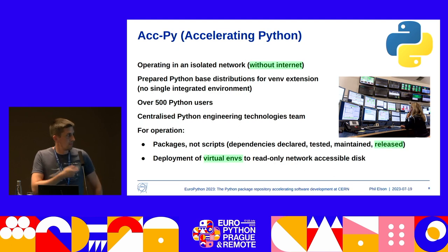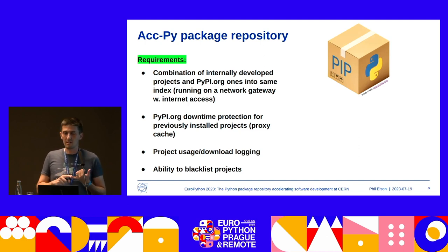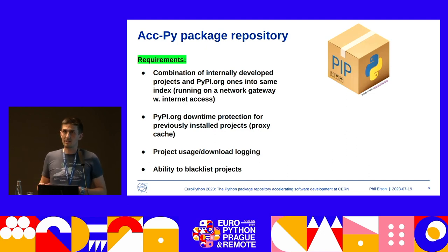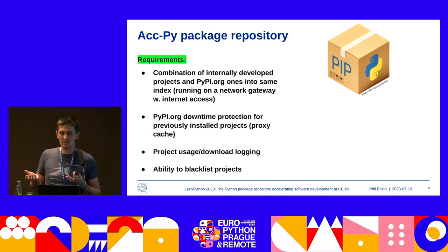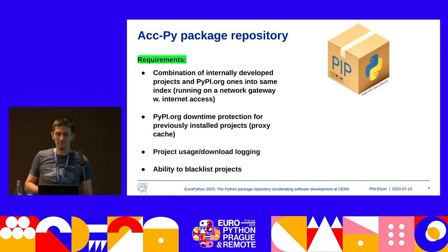Without internet and released using virtual environments, you of course need a package repository. I'm going to call it AccPy. Our package repository needs are quite simple: we have a bunch of our own internally developed packages and we want to use those on pypi.org with the same index. We'll need some kind of gateway to get the internet into our repository from a secure network. We need to protect ourselves from PyPI downtime with some kind of proxy caching — it's good enough if we can only access projects which have already recently been installed. We also want visibility of what's being used in our environment, and the ability to block known bad packages from being accidentally installed.